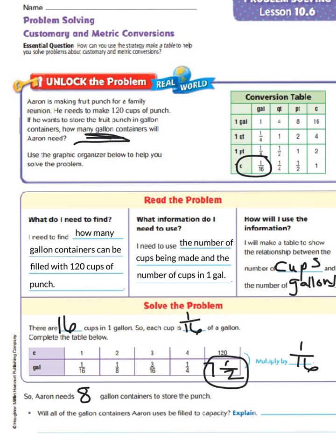Now, the next section says, will all of the gallon containers Aaron uses be filled to capacity? And the answer to that is going to be no. And the reason for that, when we look up here, we see that 120 cups equals seven and a half gallons.